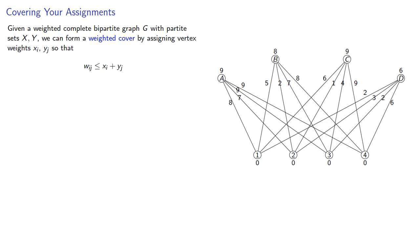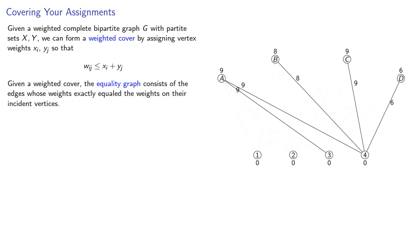Given a weighted cover, the equality graph consists of the edges whose weights exactly equal the weight of their incident vertices. And if we could find a perfect matching in the equality graph, this would give us a maximal weight assignment.